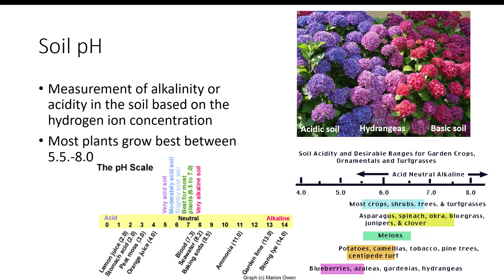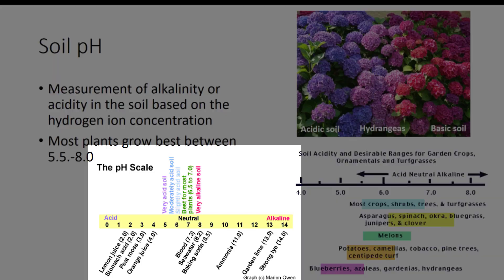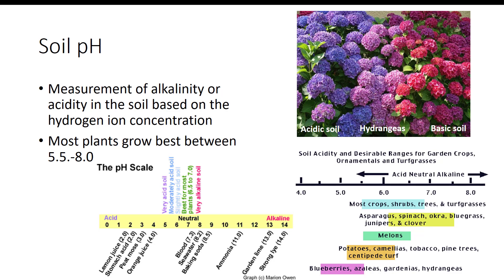Soil pH is the measurement of alkalinity or acidity in the soil based on the hydrogen ion concentration. This is based on a scale from 0 to 14. 7 is neutral, values above are alkaline, and values below are acidic. Values change by a factor of 10 for each full point on the scale. For example, a pH of 6 is 10 times more acidic than 7, and a pH of 5 is 100 times more acidic than pH 7. Most plants grow best at pH 5 to 8.0. However, some evergreen ornamentals require acidic soil for maximum plant growth. A variety of factors affect pH, such as the amount of rainfall, whether the soil has good or poor drainage, and which crops have been grown at that location over the previous seasons. The hydrangea has blue flowers in acidic soils and pink flowers in alkaline soils. This plant is sometimes called the litmus paper plant because it is so sensitive to pH.